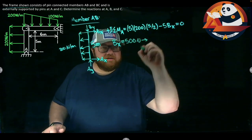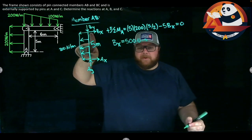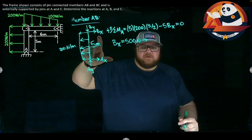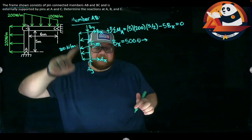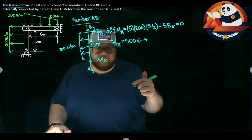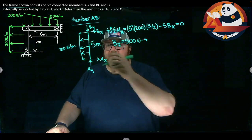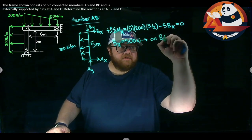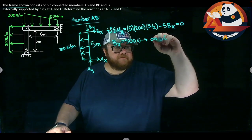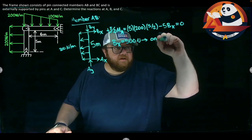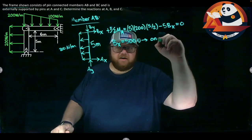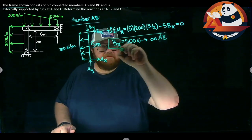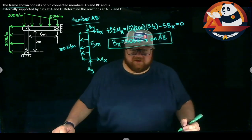500 Newtons. It's going to the right. This is an internal pin. We're connecting members together here, not attaching it to the ground or the wall. So I'm going to include on which member, because if I drew a free body diagram BC, I would change the direction around for this. So 500 Newtons to the right on AB.